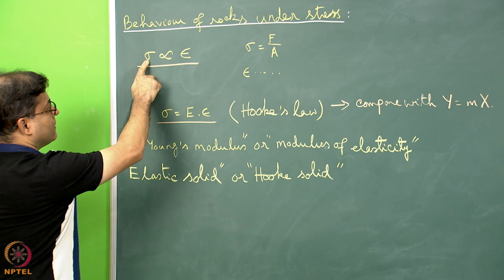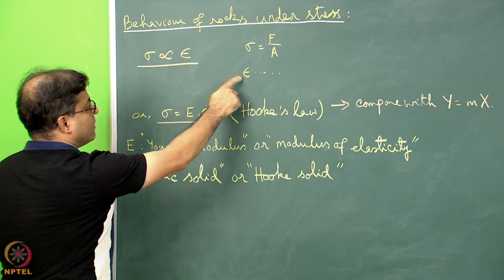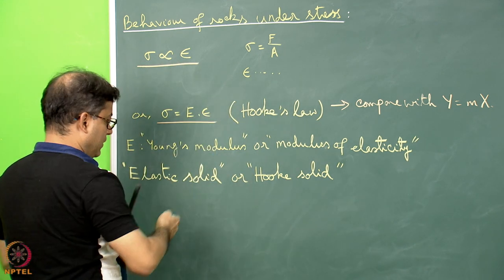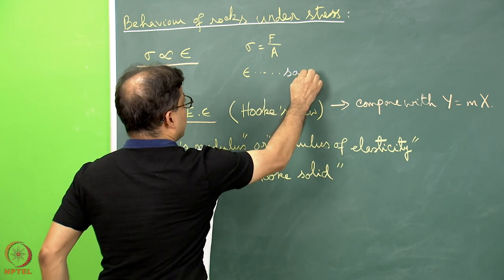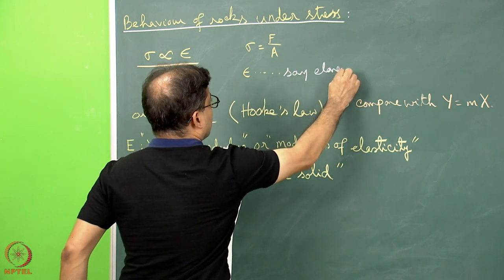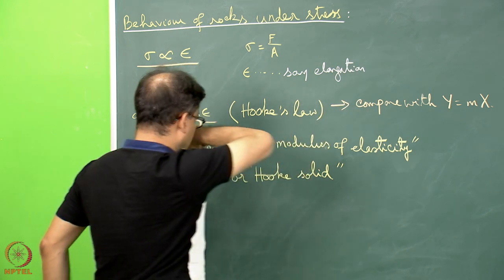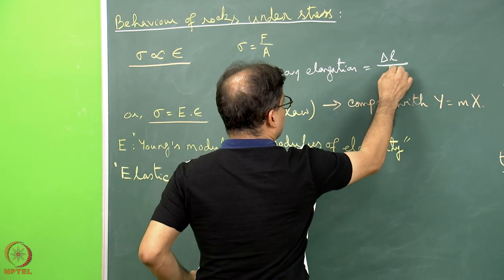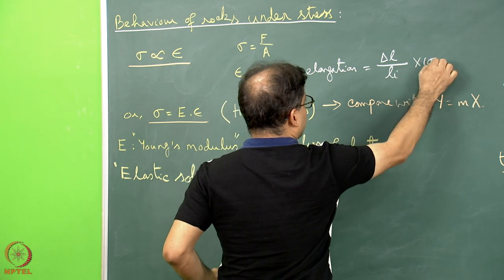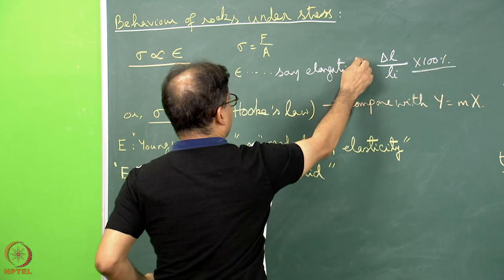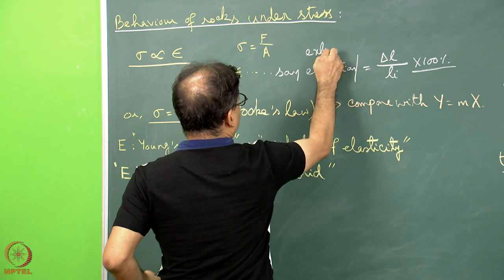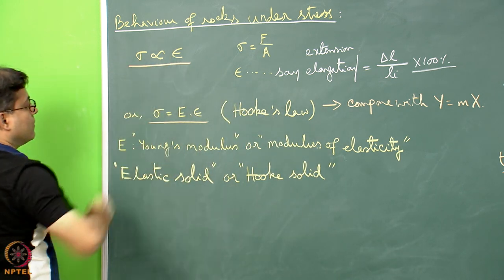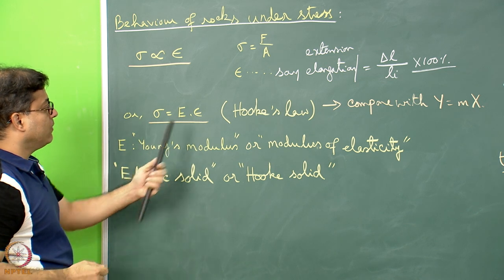Just to recollect: stress is equal to force per unit area, and strain I have already defined in different units. Let us take one of those units as epsilon — the elongation or extension parameter — which is the change in length per unit original length, or multiplied by 100 as percentage elongation or extension. From this we can say stress is equal to E multiplied by epsilon.